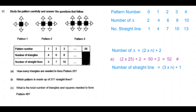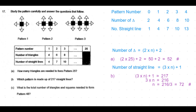So the formula for the number of straight lines is 3n plus 1. Which pattern will have 217 straight lines? That means 3n plus 1 = 217, so 3n = 216, and n = 216 divided by 3, which is 72. Pattern number 72 will have 217 straight lines.